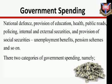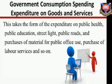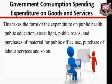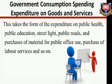This set of government spending can be categorised into two. First, government consumption spending — expenditure on goods and services. This takes the form of expenditure on public health, public education, street lighting, public roads, purchases of materials for public office use, purchase of labour services, and so on.